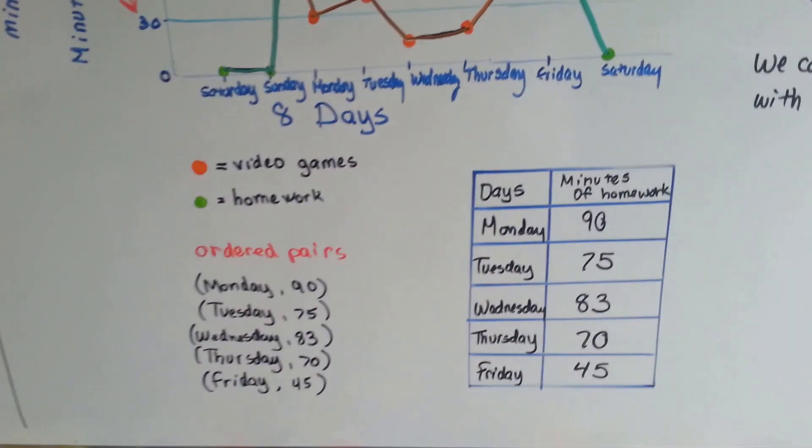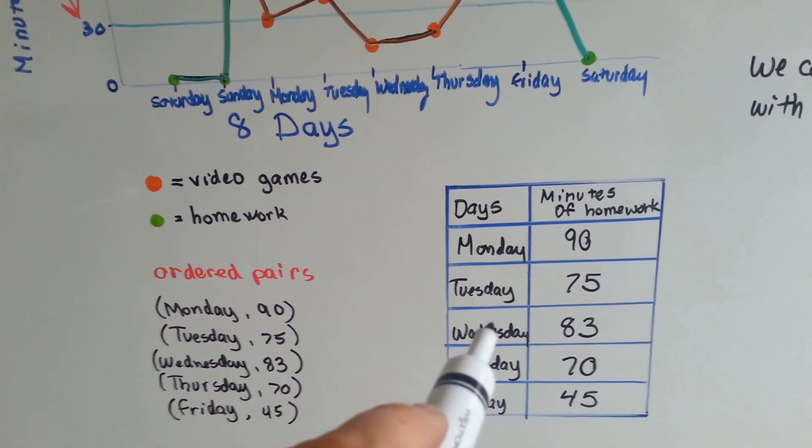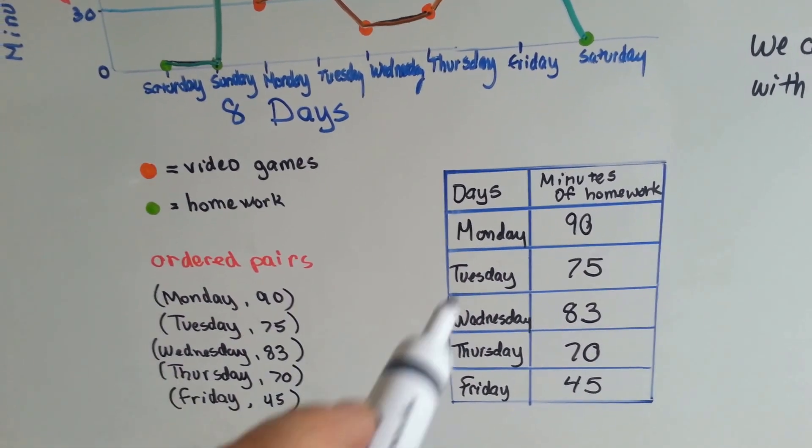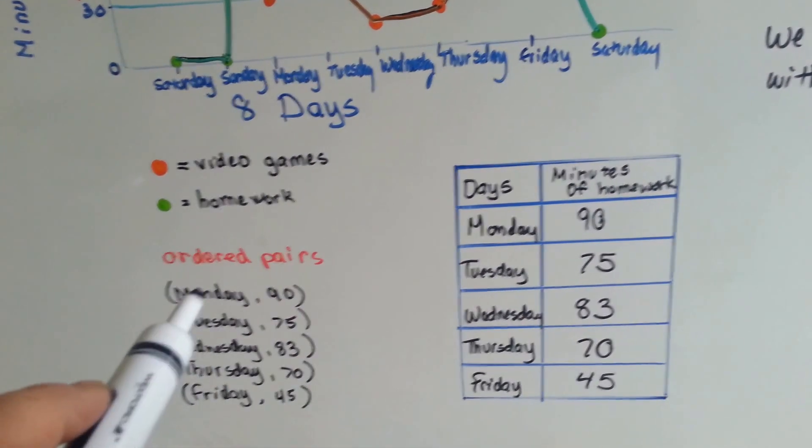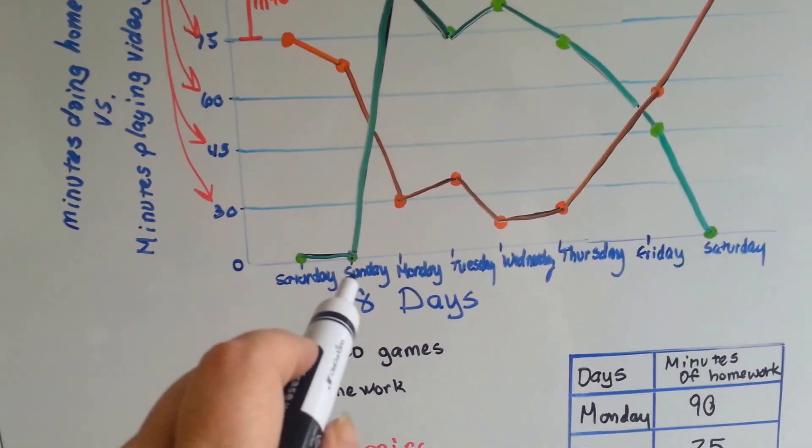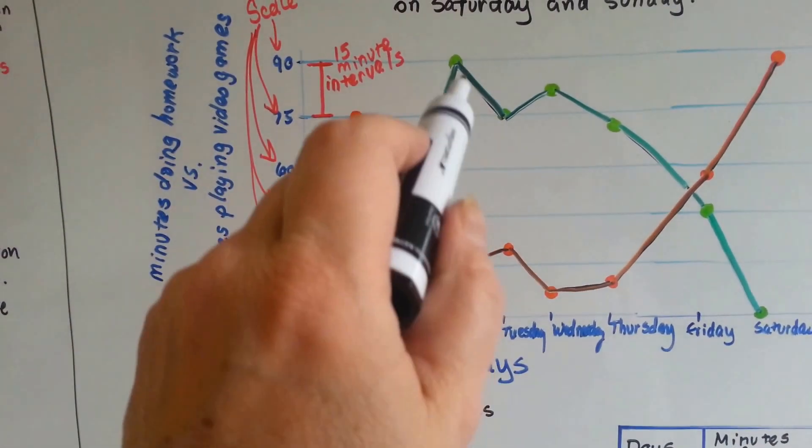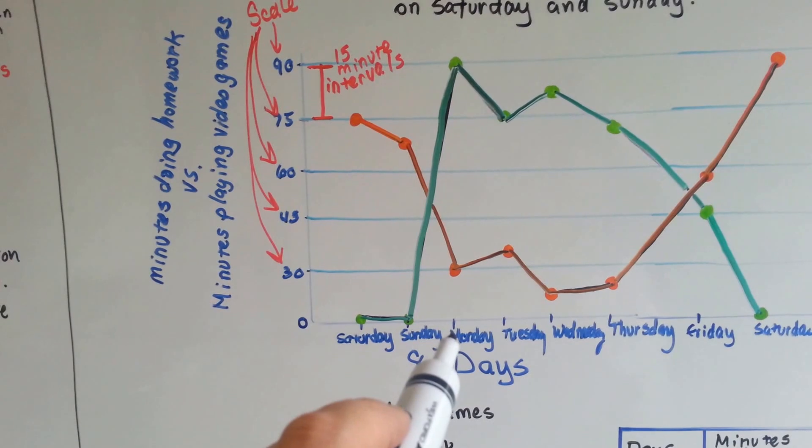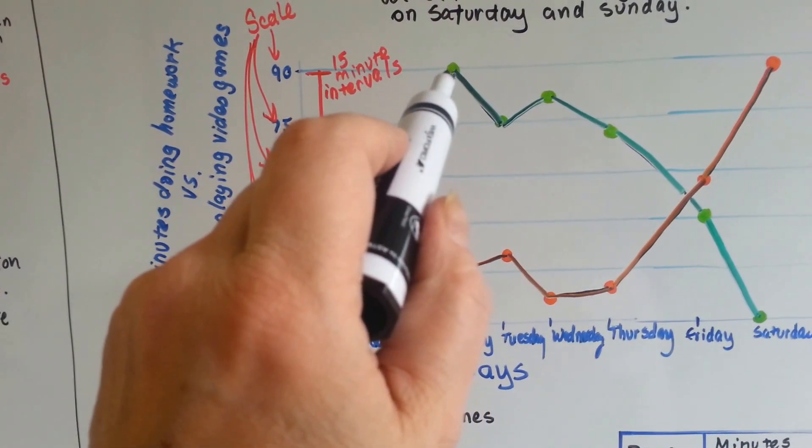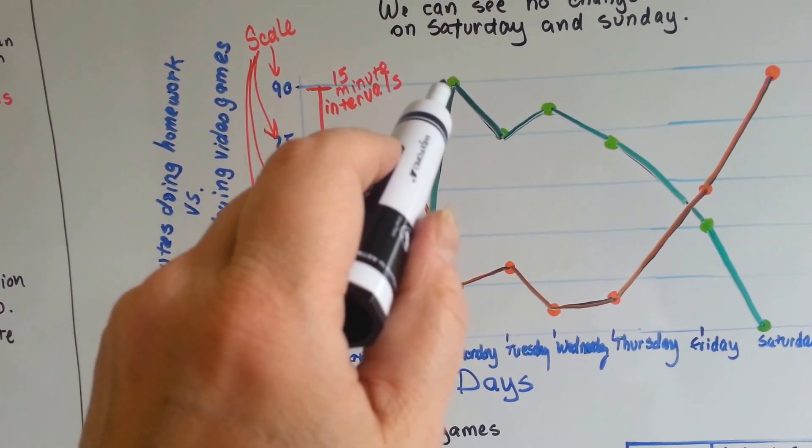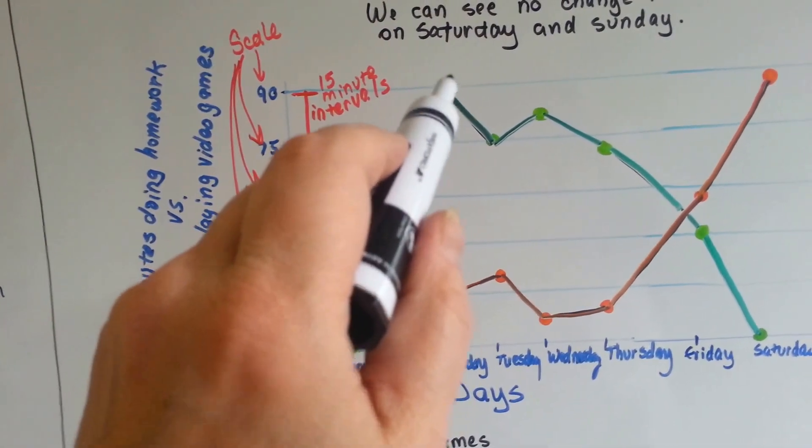When we look at a table of the information, we end up making our ordered pairs. Monday and 90 minutes is our first ordered pair. For homework, Monday is at 90. So our first x coordinate is Monday and our y coordinate is 90 minutes. And that's where we plot the point.